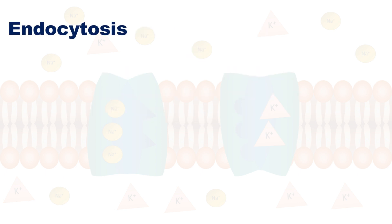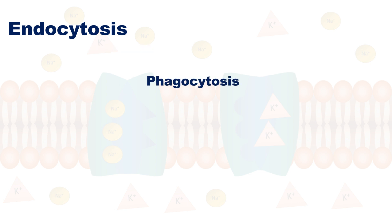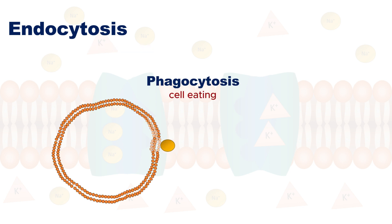Endocytosis is the process that brings materials into the cell. There are two major types. The first is phagocytosis, also known as cell eating.